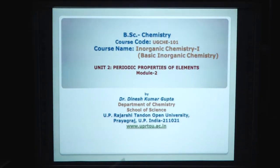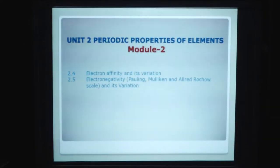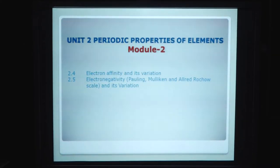Unit 2 periodic properties of elements module 2. In this module you study electron affinity and its variation and electronegativity Pauling, Mulliken and Eldred-Roach scale and its variation.